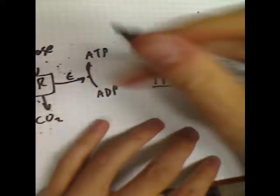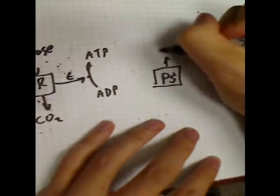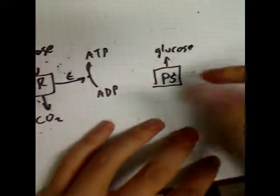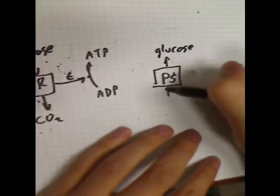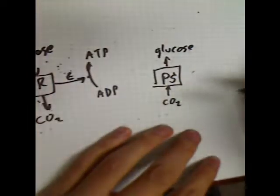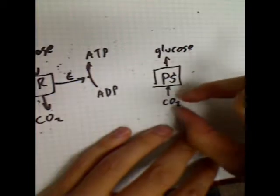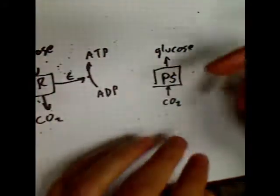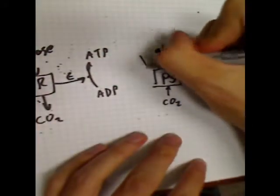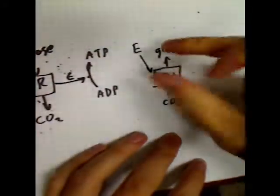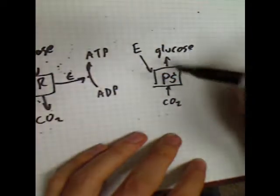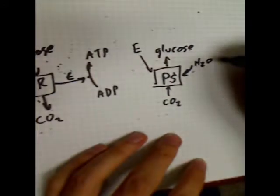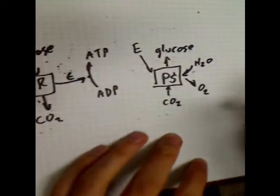What goes into aerobic respiration is glucose, so glucose is what photosynthesis produces. It produces glucose out of those low-energy carbon dioxide molecules — taking those carbons and shoving them together into high-energy carbon-carbon bonds. That requires energy, which comes in the form of light. Along the way, photosynthesis consumes some water and produces some oxygen.